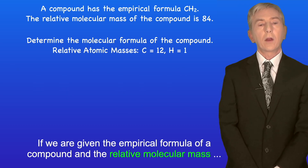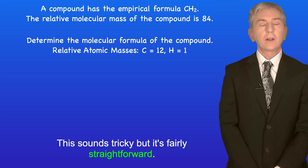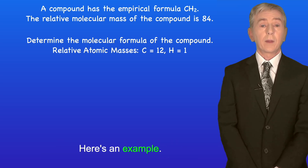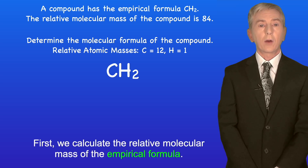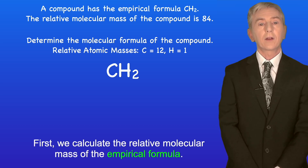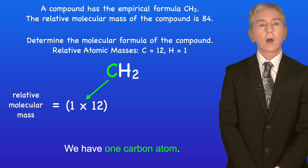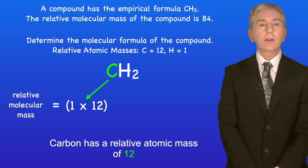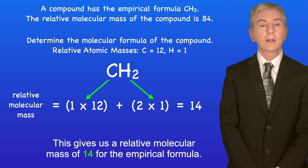If we are given the empirical formula of a compound and the relative molecular mass, then we can determine the molecular formula of that compound. This sounds tricky but it's fairly straightforward. Here's an example: a compound has the empirical formula CH2 and the relative molecular mass of the compound is 84. First we calculate the relative molecular mass of the empirical formula. We have one carbon atom — carbon has a relative atomic mass of 12 — and two hydrogen atoms — hydrogen has a relative atomic mass of 1.